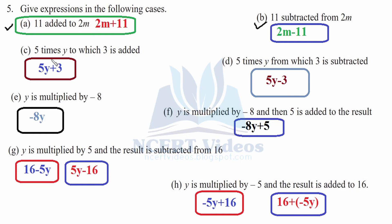C part: 5 times y. Y is getting multiplied 5 times, so 5y. Whatever output is coming, 3 is getting added to it — therefore, we write 5y plus 3. Here again, 5 times y — y is getting multiplied 5 times, and from that output, 3 is getting subtracted — we write 5y minus 3. E part: y is multiplied by minus 8. We just multiply both of them — minus 8y will come as your expression.